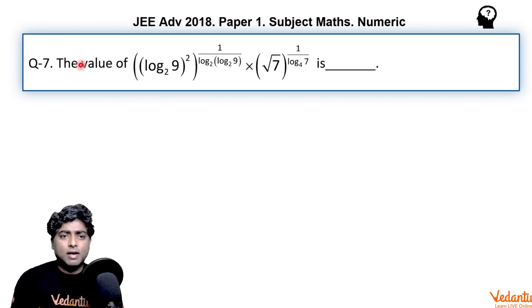It says the value of log 9 to the base 2, whole squared, to the power 1 upon log of log 9 to the base 2 to the base 2, into the entire thing multiplied by root 7, whole raised to the power 1 upon log 7 to the base 4. Let's have a look at the solution and how we can solve it in an easy manner.